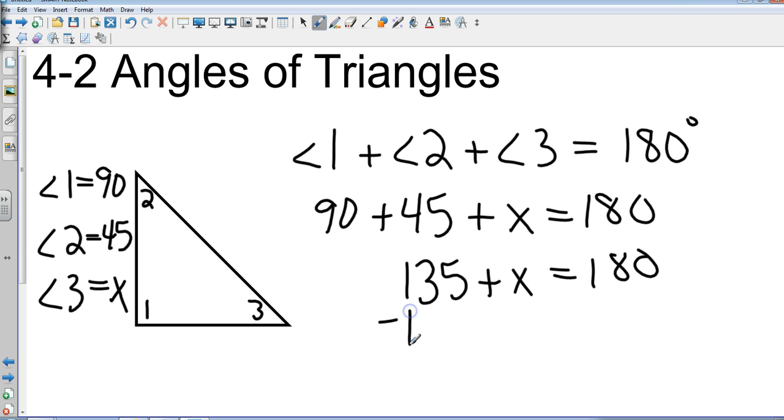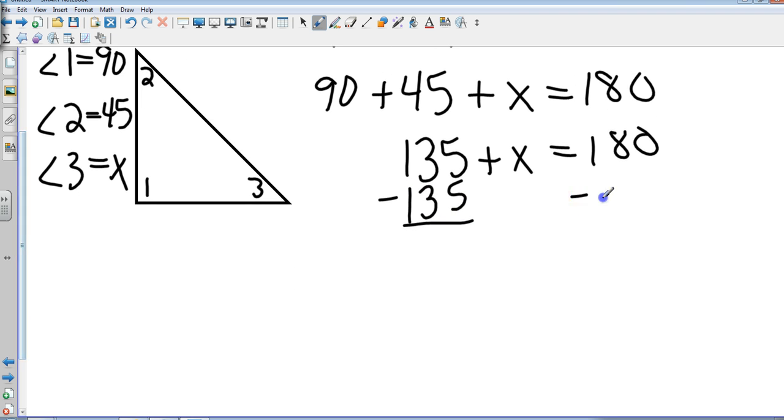I'm going to subtract 135 from both sides, so at the end of the problem I get a missing angle of 45 degrees. Most of you could have figured that out because 45 is half of 90 and 90 plus 90 is 180, so I know the missing angle has to be 45. Both of those angles are the same.